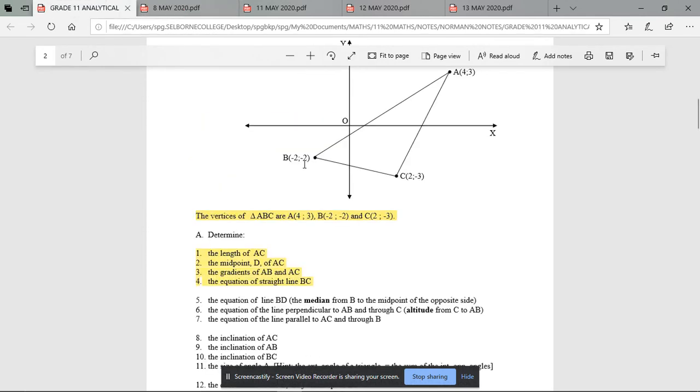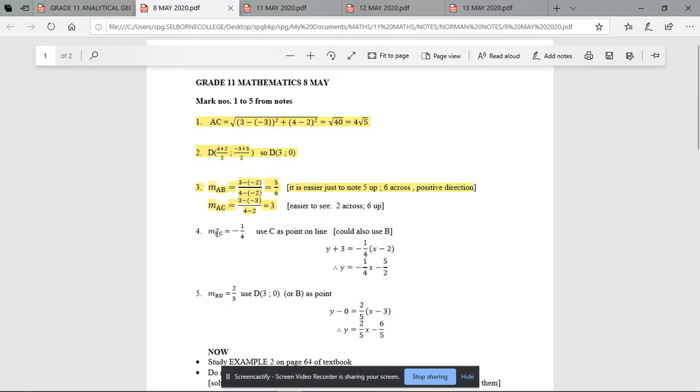Negative a quarter. Let's just check. Change in Y, negative 2 to negative 3 is 1, 1 up or down. And negative 2 to 2 is a change of 4. So 1 over 4, and it's negative. So that is correct. There we go. That's that line of working out there.